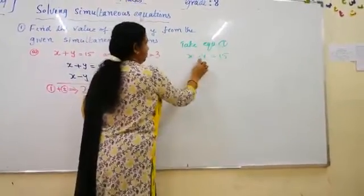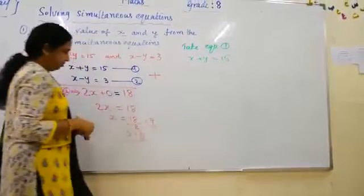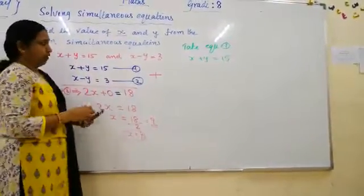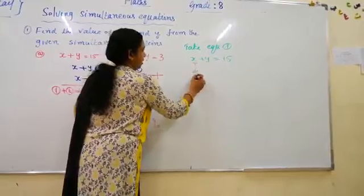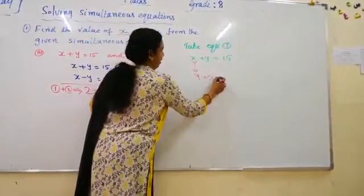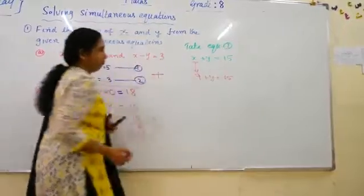Take equation 1, x plus y is equal to 15. So already we have the x value with us. x is now 9, so 9 plus y equal to 15.